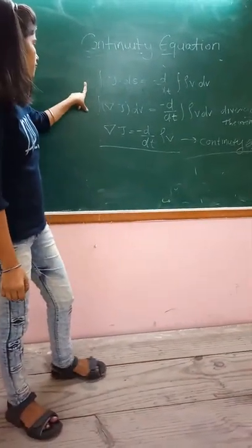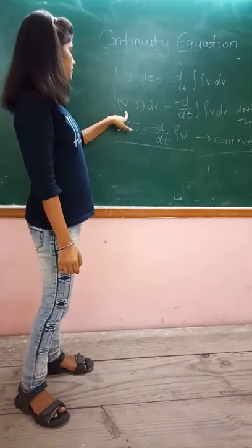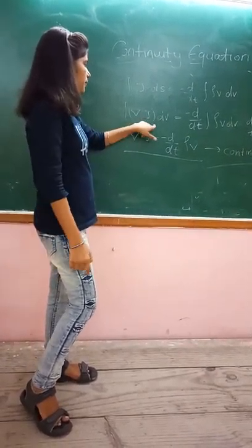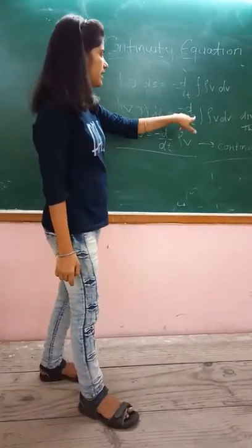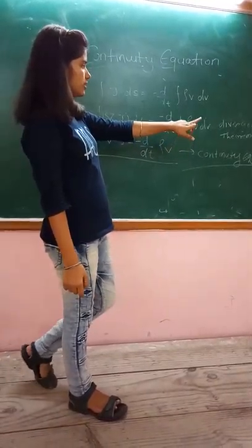From the divergence theorem, we get the integration of ∇·j dv is equal to minus d/dt times the integral of ρ dv.